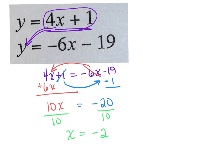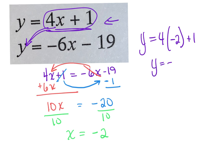Negative 20 divided by positive 10 is negative 2. To solve, I can plug it back into either one of these. y equals — I'm going to use the top one — 4 times negative 2, write negative 2 plus 1. 4 times negative 2 is negative 8 plus 1. Negative 8 plus 1 is negative 7. So my answer here is x, y: negative 2, negative 7.